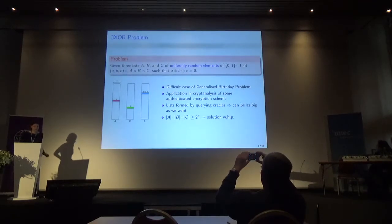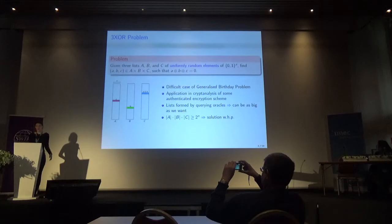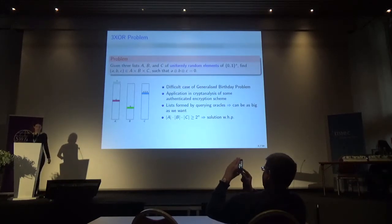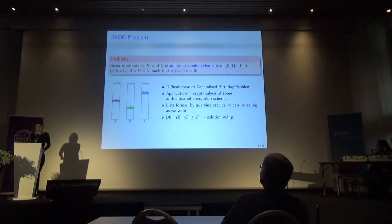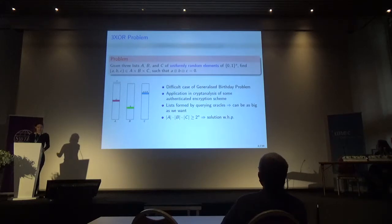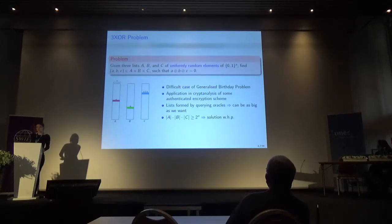The problem we are facing is the following. We are given three lists A, B, and C of uniformly random elements that are n-bit vectors. We want to find one element in each list such that when we XOR them together, we obtain zero. This is a difficult case of the generalized birthday problem introduced by Wagner in 2002, with applications in the cryptanalysis of some authenticated encryption schemes such as the COPA-based ones.